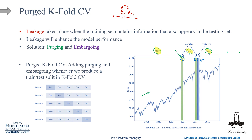Applying purging and embargoing to k-fold cross-validation gives us purged k-fold cross-validation. For example, in a five-fold cross-validation, every time you create a train-test split, you apply purge and embargo. Then you calculate the performance on the test set in each fold and, just like any other k-fold cross-validation, combine these performances — for example by averaging the RMSE — to get the final cross-validation performance metric.